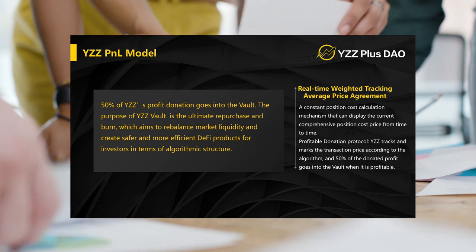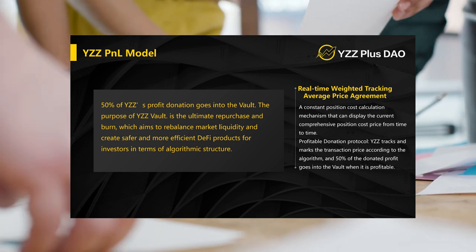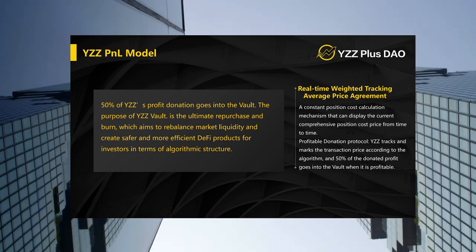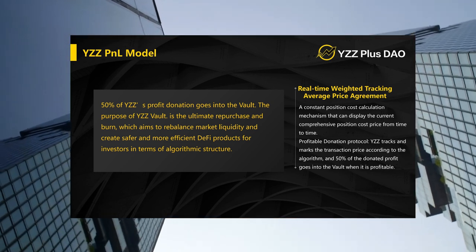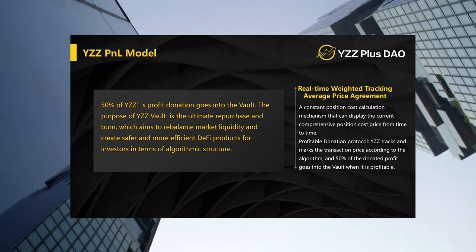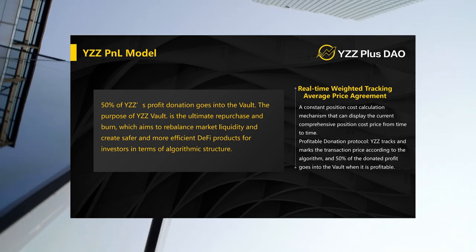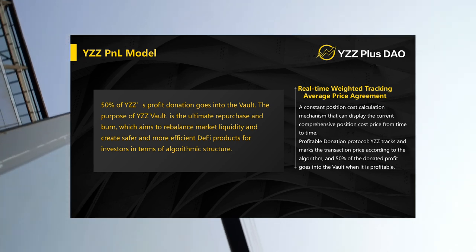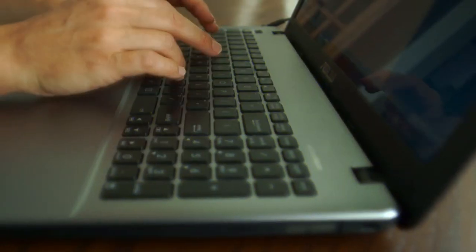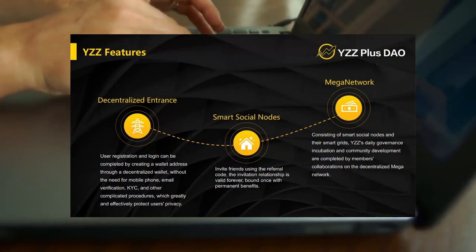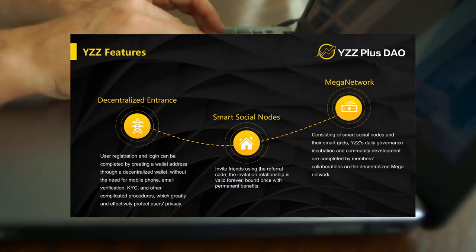The last important component is the Vault, which is a way of distributing funds. Fifty percent of the trading profits and 1% of the gas fees go to the Vault, and the Vault redeems the tokens and destroys them. These and other components of YZZ form its main advantages.